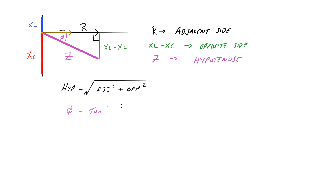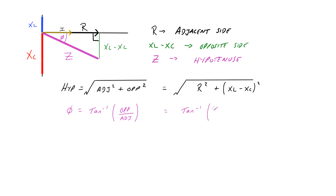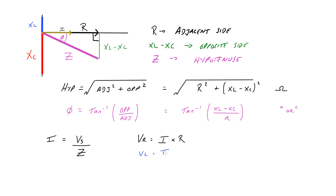To find the impedance, the hypotenuse is the square root of the adjacent squared plus the opposite side squared, and the phase angle is tan to the minus one of opposite over adjacent. So the impedance is the square root of R squared plus the difference in the reactances squared, and the phase difference is tan to the minus one of the difference of the reactances divided by the resistance. The phase angle can be degrees or radians. The current is voltage divided by impedance, which is Ohm's law. The voltage across the resistor is the current times the resistance, the voltage across the inductor is the current times the inductive reactance, and the voltage across the capacitor is the current times the capacitive reactance.